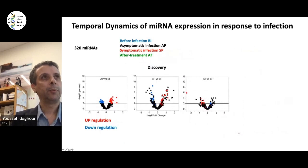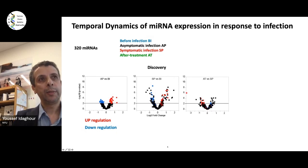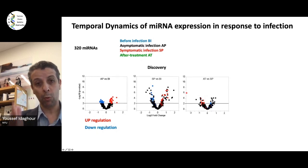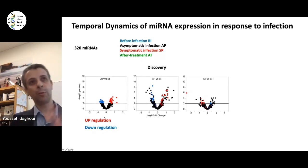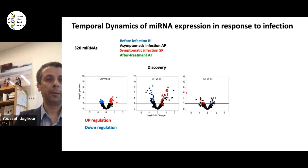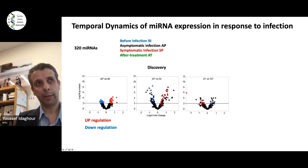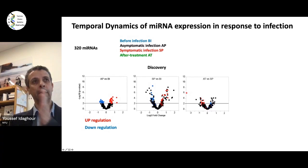Using this method, we detected 320 microRNAs in these individuals. We do differential microRNA expression analysis to detect which microRNAs go up or down. Because we have four stages, we can see exactly how they change over time. In the first plot, we have some microRNAs upregulated and some downregulated — this is from before infection to the asymptomatic parasitemia stage, showing that changes are already taking place early during infection.